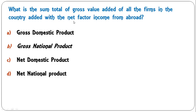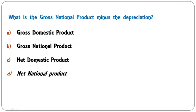What is the sum total of gross value added of all the firms in the country added with the net factor income? GDP plus net factor income is nothing but Gross National Product (GNP). So B is the correct answer. And what is GNP minus depreciation? GNP minus depreciation is Net National Product (NNP), so D is the correct answer.